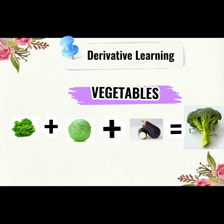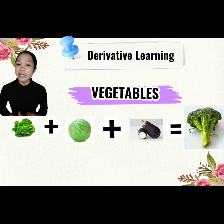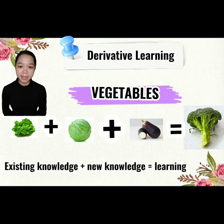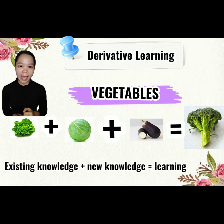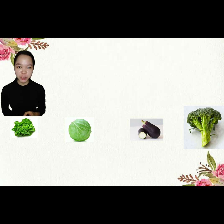but you already know that it is also a vegetable because it draws on your existing knowledge of vegetables, and that is your new knowledge. In other words, if you combine your existing knowledge with your new knowledge, it will result in learning. That is how derivative learning or subsumption works.